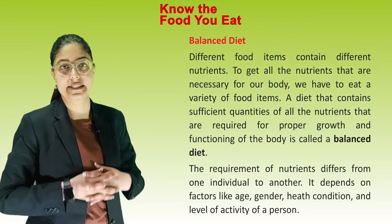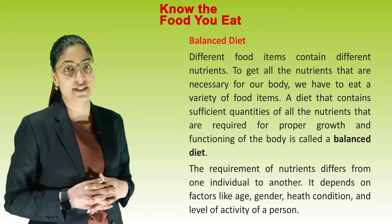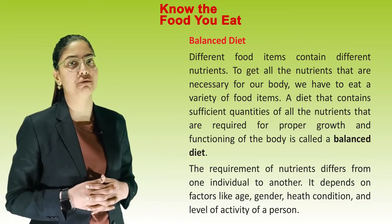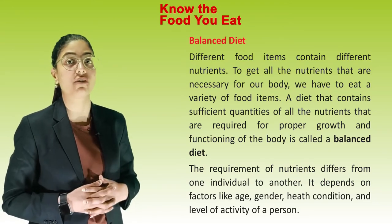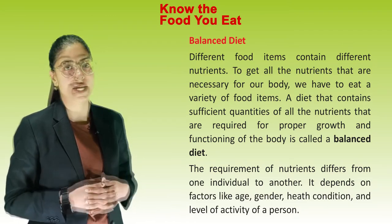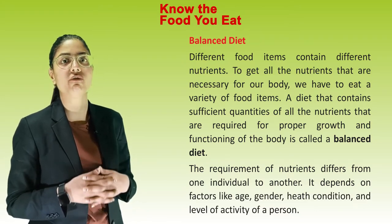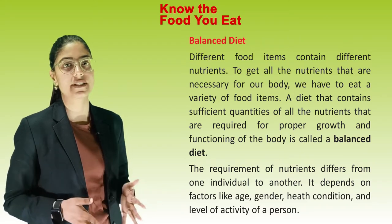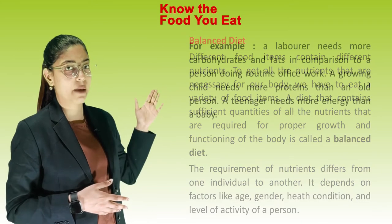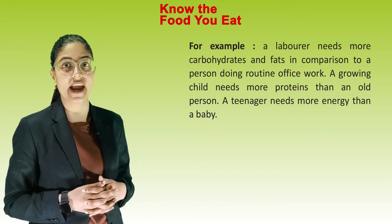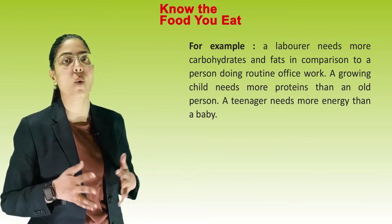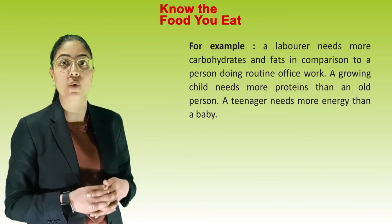Next topic is balanced diet. Different food items contain different nutrients. To get all the nutrients necessary for our body, we have to eat a variety of food items. A diet that contains sufficient quantities of all nutrients required for proper growth and functioning of the body is called a balanced diet. The requirement of nutrients differs from one individual to another depending on factors like age, gender, health conditions and level of activity. For example, a laborer needs more carbohydrates and fats compared to a person doing routine office work. A growing child needs more protein than an old person, and a teenager needs more energy than a baby.